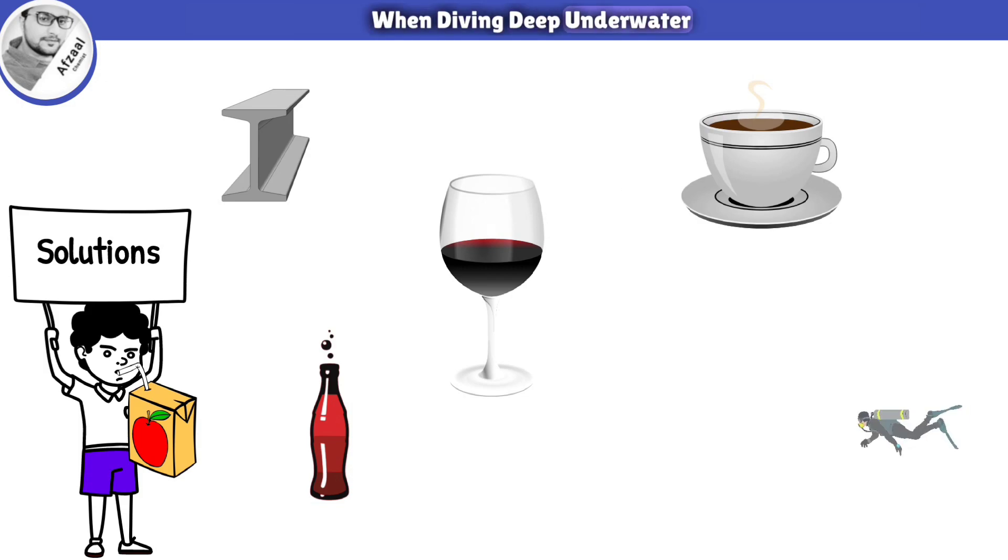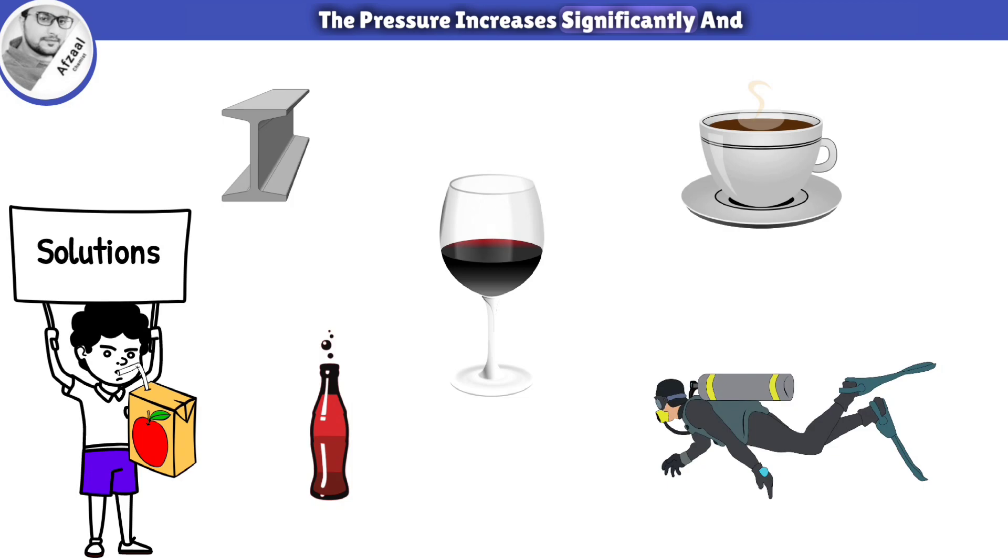When diving deep underwater, the pressure increases significantly and breathing regular air becomes dangerous. That's why the diver's cylinder contains a solution of oxygen, nitrogen, and helium.